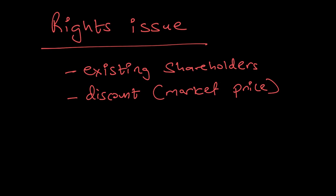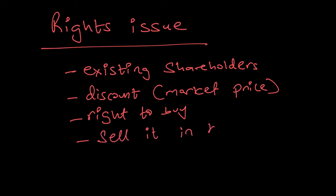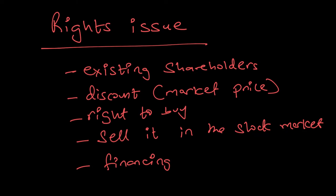Existing shareholders will buy additional shares only if offered at a discount compared to the market price. It is a right — if a shareholder does not want to buy, they can refuse. Companies offer rights issues regularly because it's a quicker way to raise financing. Shareholders can also buy these shares at a discount and then sell them on the stock market to make a profit.